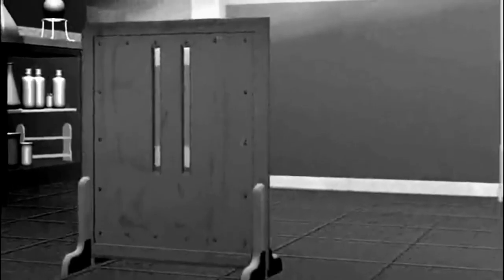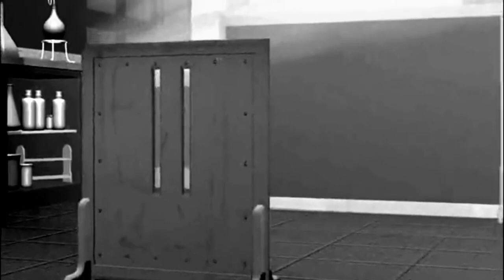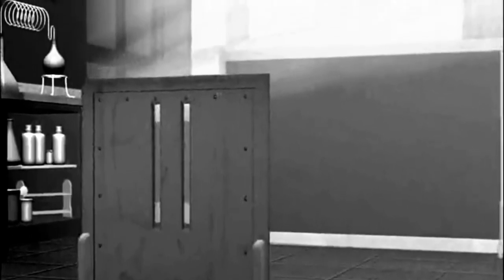To understand this experiment, suppose we randomly shoot particles at a screen with two slits. For each particle shot at the screen, we would expect one of three outcomes. Outcome one, the particle passes through the right slit and hits the wall behind the screen.